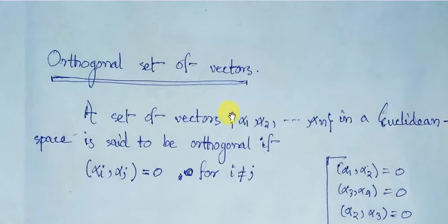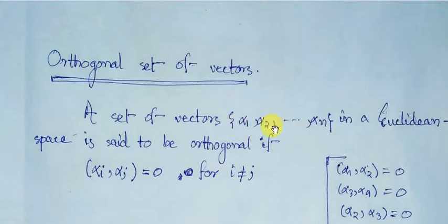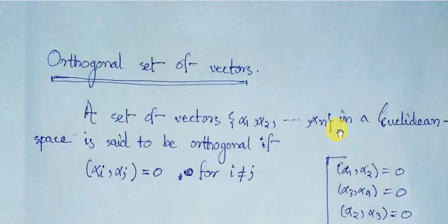Suppose we have considered a set of vectors: alpha 1, alpha 2, so on, alpha n. Each and every member is a vector and we have considered this collection from a Euclidean space — meaning a vector space upon which a specific inner product function has been defined.